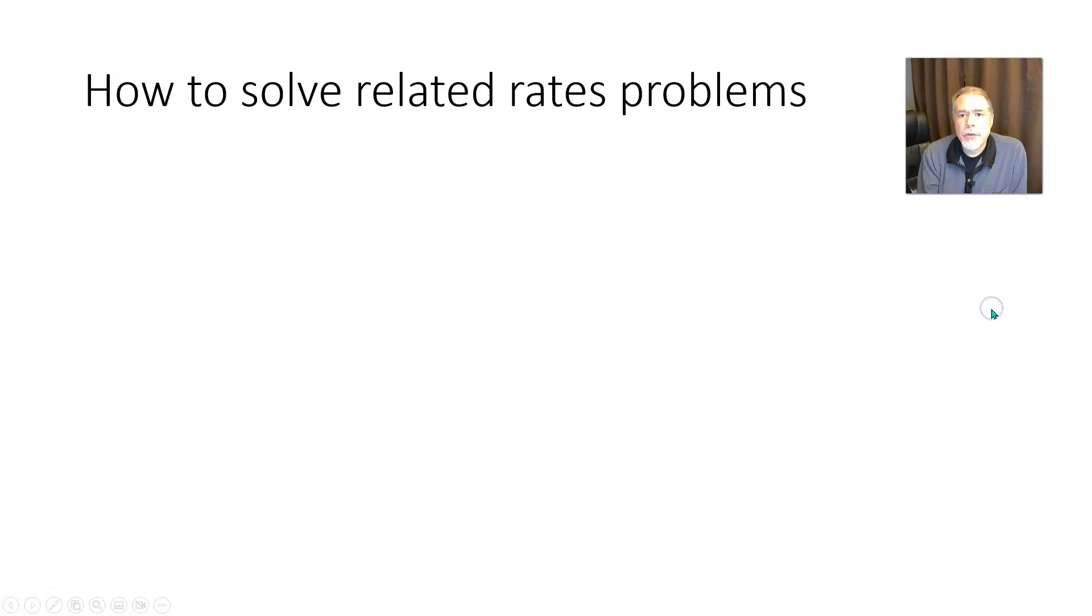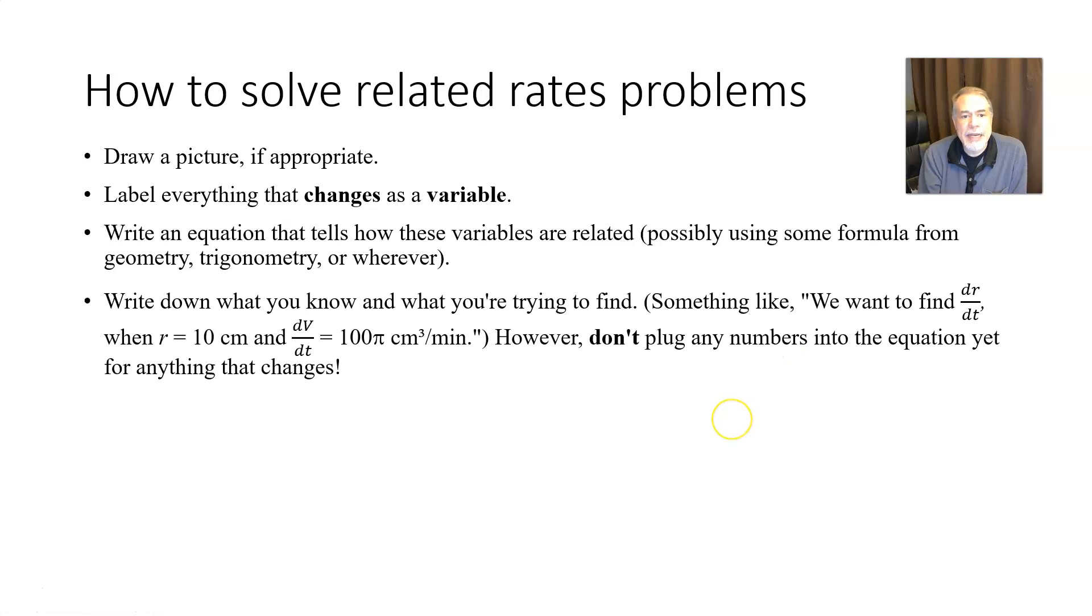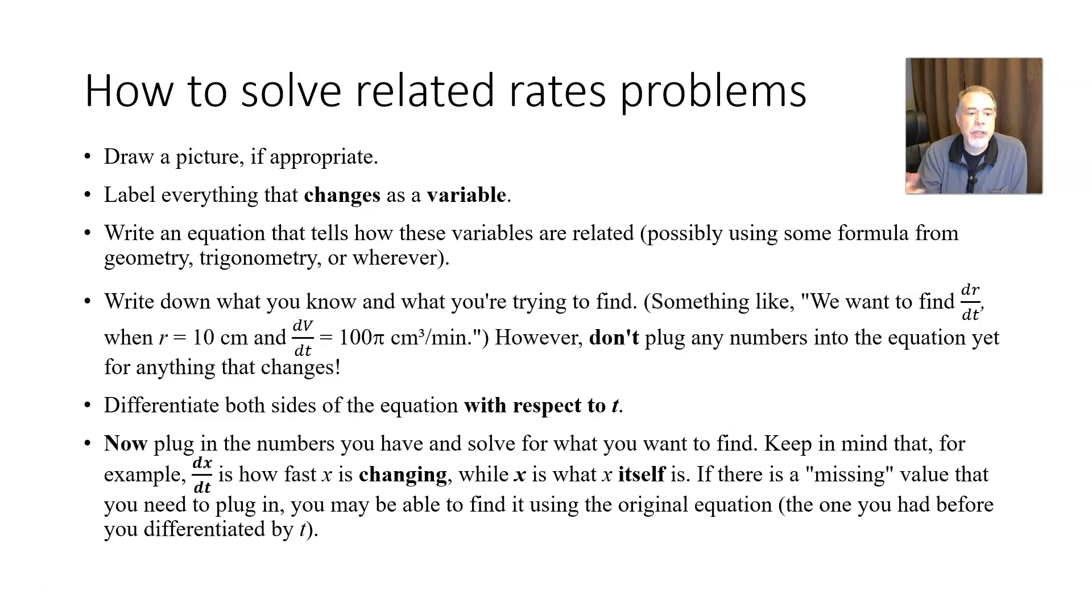So I went over the steps that you can go through to solve a related rates problem: draw a picture if appropriate, label everything that changes as a variable, write an equation that tells how these variables are related, write down what you know and what you're trying to find, differentiate both sides of the equation with respect to t, and then plug in the numbers you have and solve for what you're trying to find.